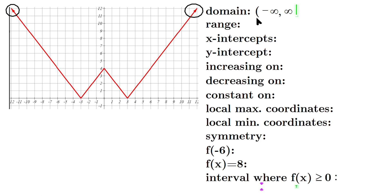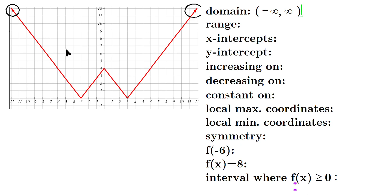Any value of X you can possibly imagine can be plugged in. When three goes in, zero comes out. When zero goes in, four comes out. When eight goes in, roughly seven comes out. It's like that for any input you can imagine — there are no excluded values of the input.